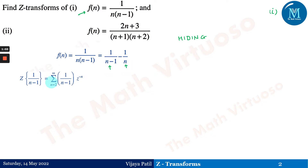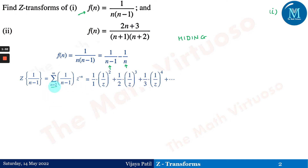The Z-transform of 1/(n-1) equals the summation of 1/(n-1) · z^(-n), with n running from 2 to infinity. We cannot start from n=0 or n=1, because at n=0 the term becomes 1/(-1), and at n=1 the factor 1/(n-1) goes to infinity, which we want to avoid. That is why the summation starts from n=2.